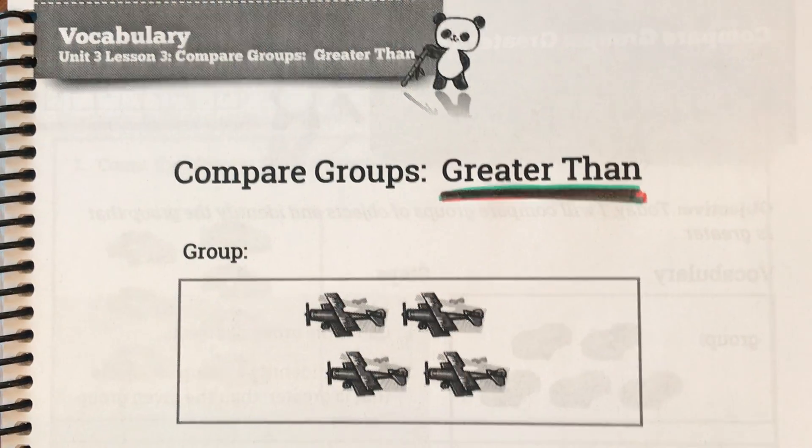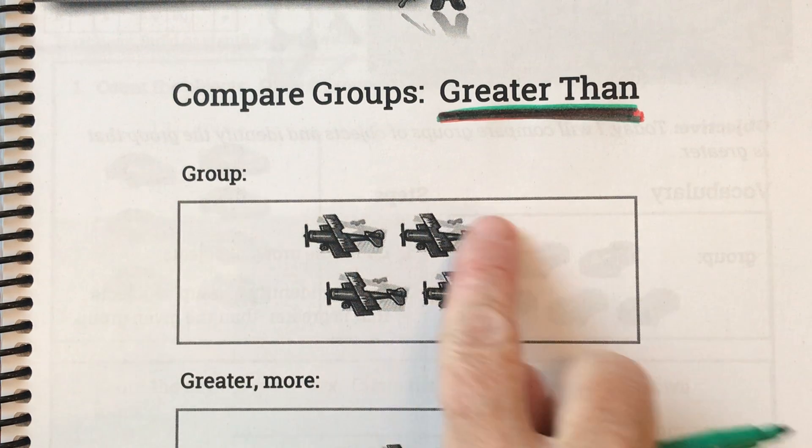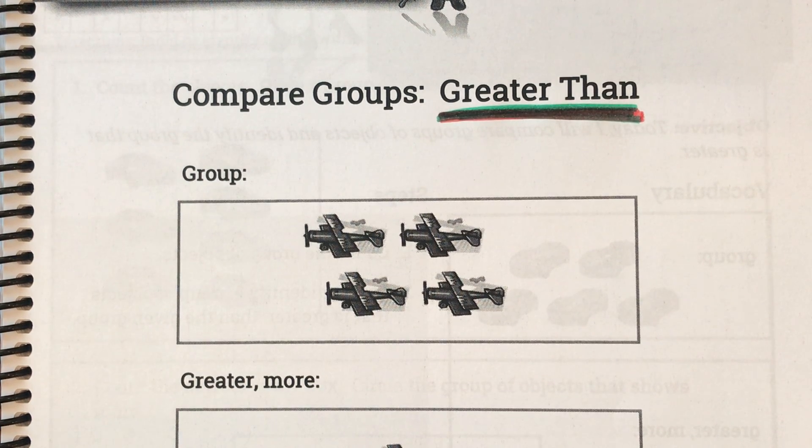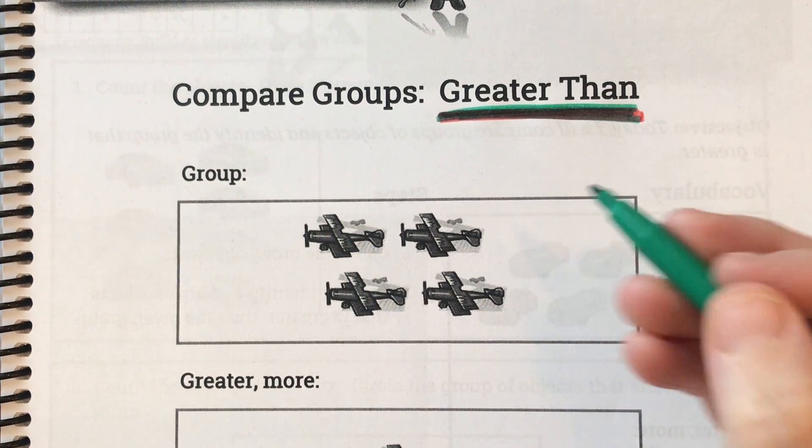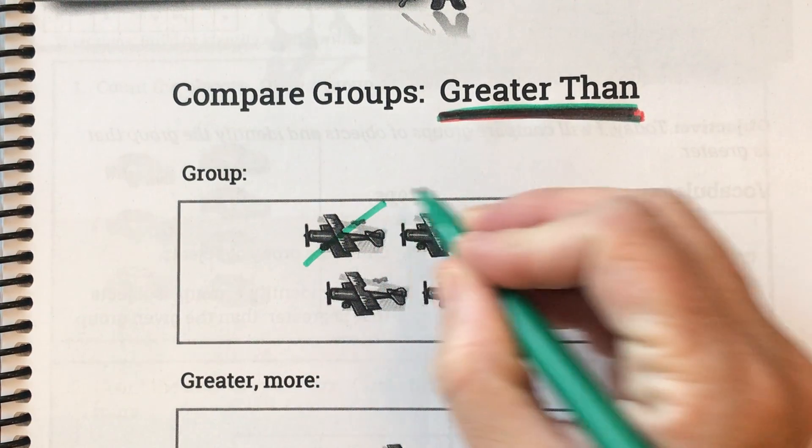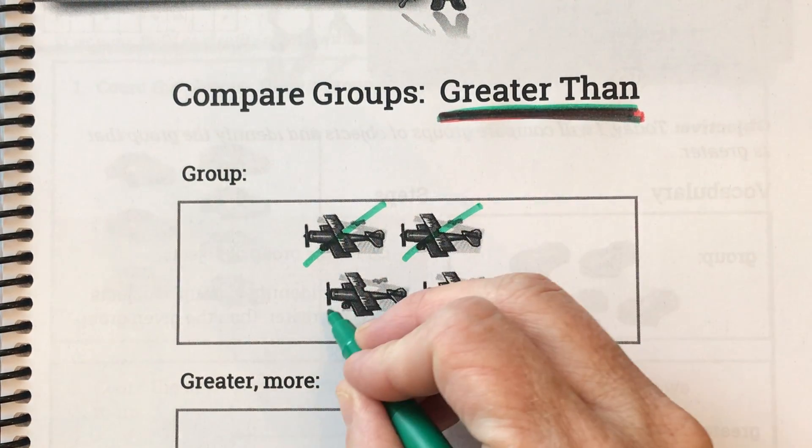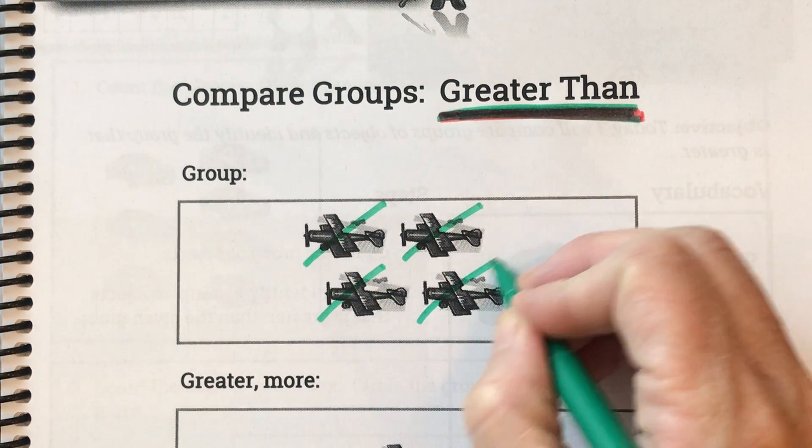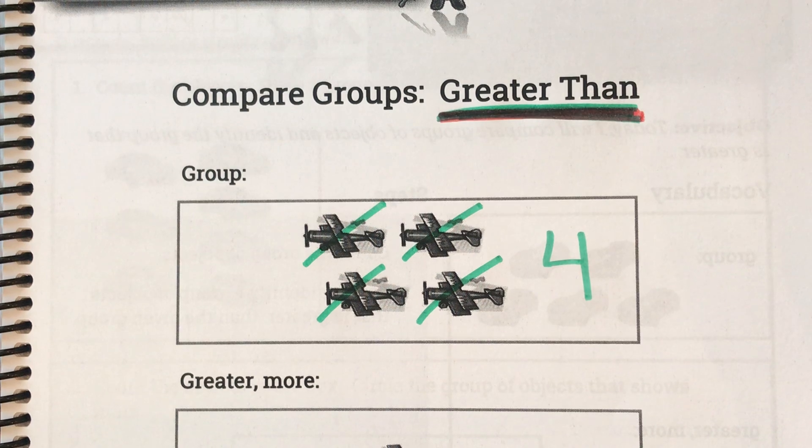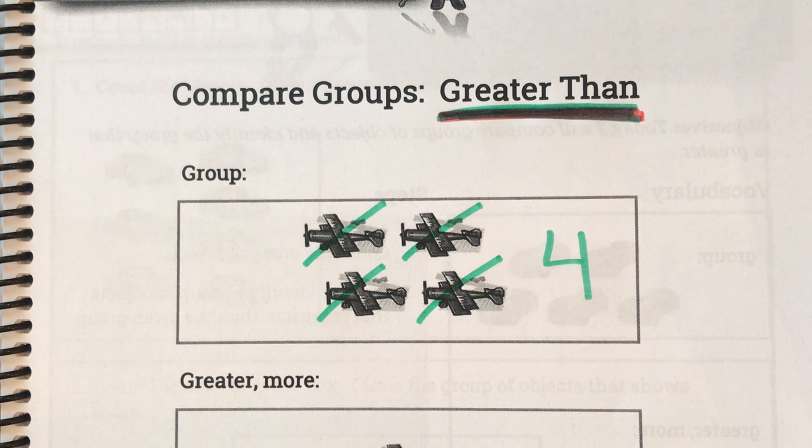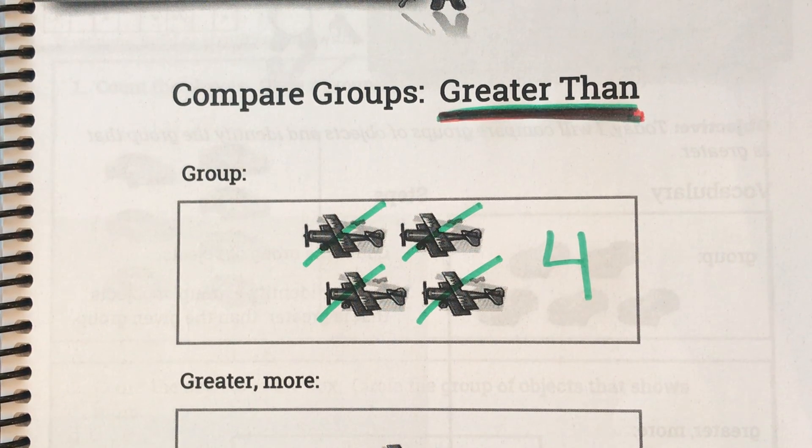So let's look at our first box. This reminds us what a group is, and remember a group is any time there is more than one, we can call that a group. Let's count how many is in this group. So get your pencil ready so we can cross off. Ready? One, two, three, four. There are four objects in that group.